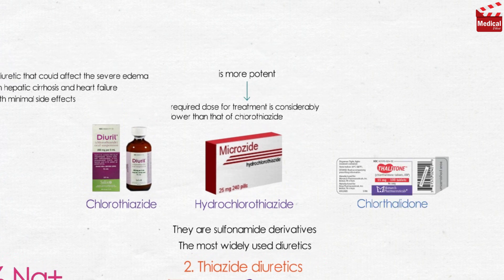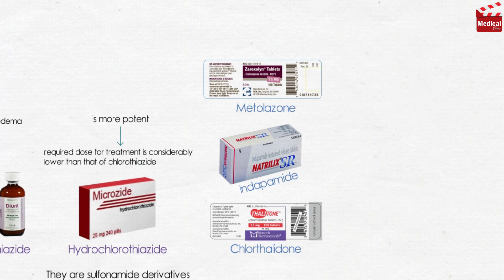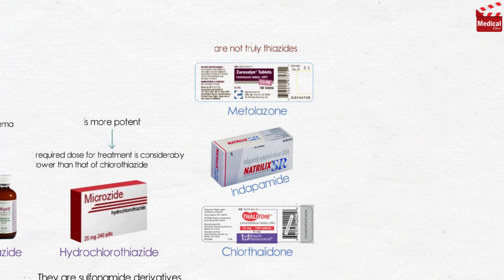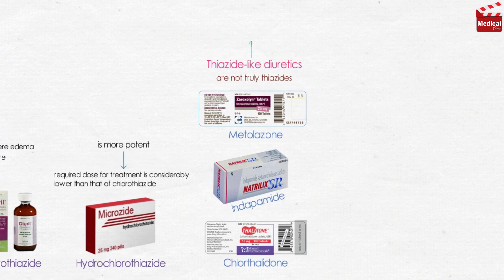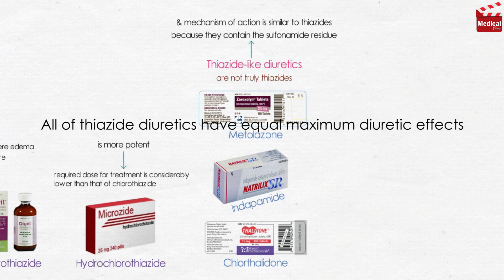Chlorthalidone, indapamide, and metolazone are not truly thiazides, but are referred to as thiazide-like diuretics because they contain the sulfonamide residue in their chemical structures and their mechanism of action is similar to thiazides. All thiazide diuretics have equal maximum diuretic effects, but differ only in potency.